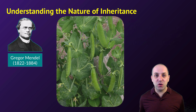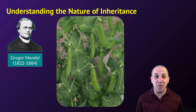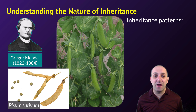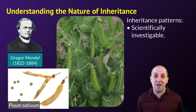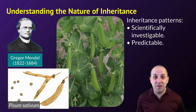The first major place that I want to spotlight is our understanding of the nature of inheritance. This work was done back in the late 1800s by Gregor Mendel, who did some experiments with pea plants. He determined that inheritance patterns could be investigated scientifically, came up with a whole method for doing this, and that once they were investigated and understood, that understanding could be used to predict the kinds of ratios that we'll see in offspring.